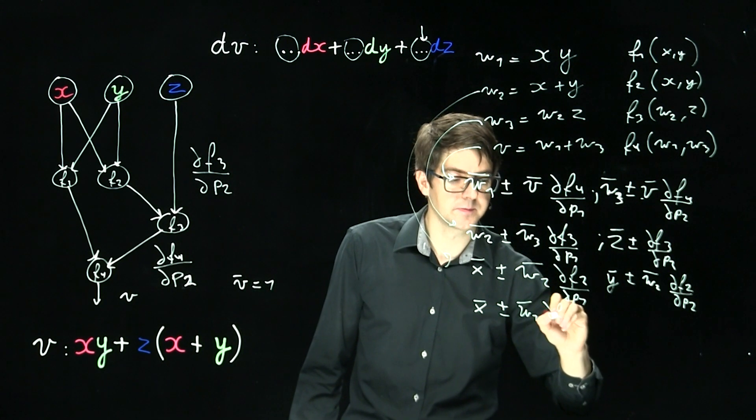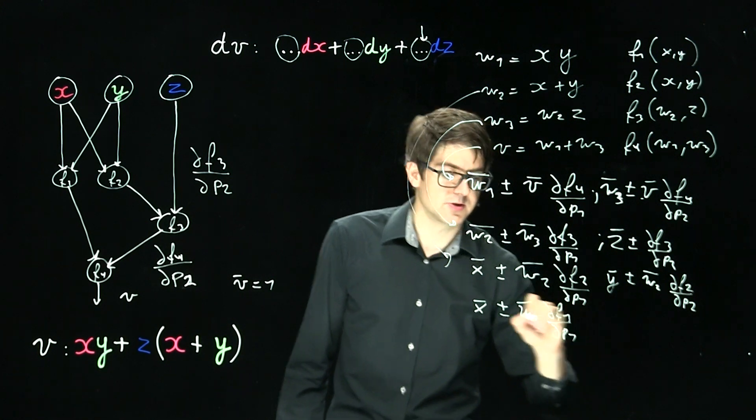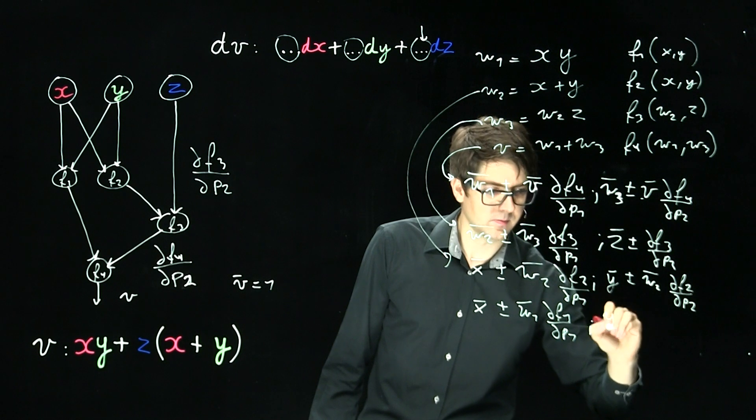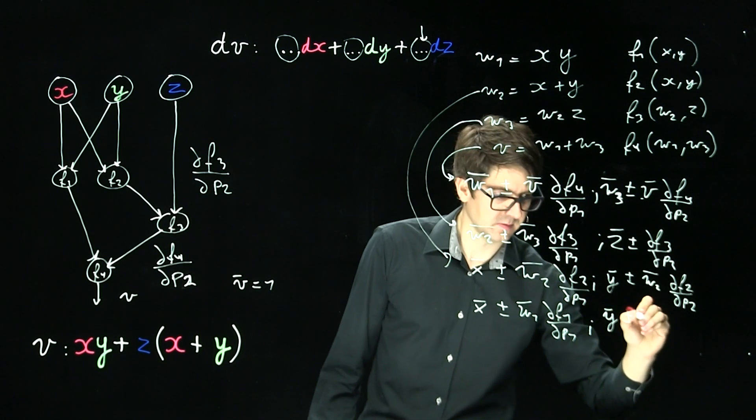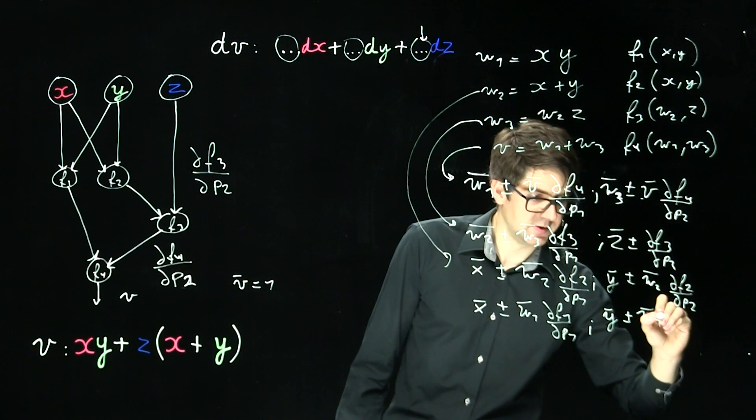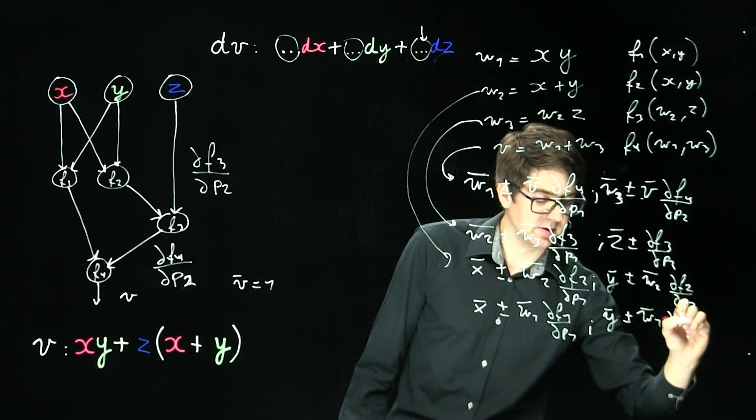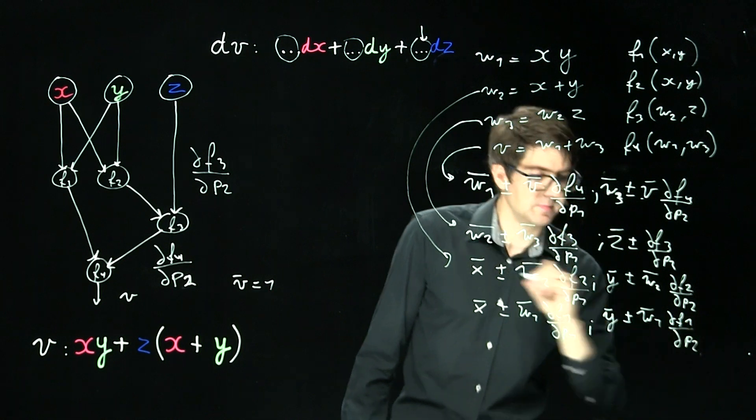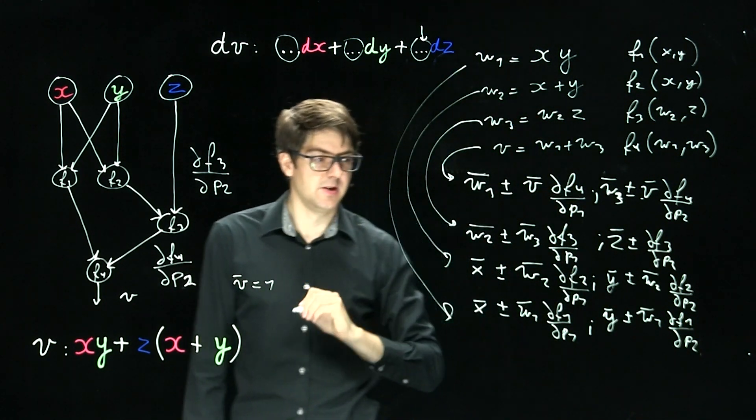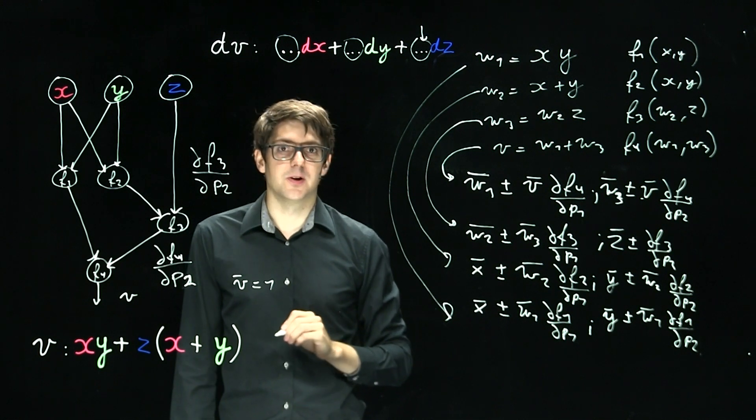W1 bar partial of F1 with respect to first argument. W bar 1, W1 bar and the partial with respect to P2. That's really the gist of reverse mode algorithmic differentiation.